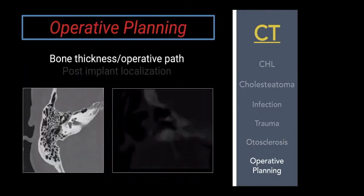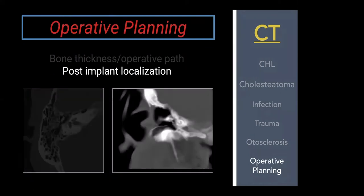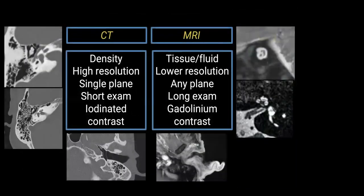CT is also used for operative planning, particularly for cochlear implants — measuring bone thickness and verifying the operative path from the mastoid to the round window. We can also use 3D reconstructions for post-implant localization to assess depth of insertion and position within the cochlea. In summary, CT measures density. Bones are what's key, so CT addresses the lateral temporal bone — the conductive component plus the otic capsule.